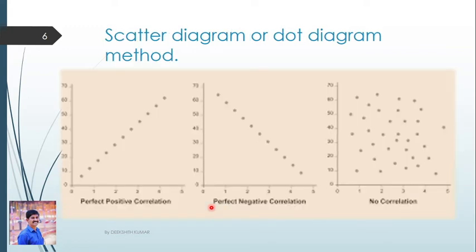The first method is the scatter diagram or dot diagram method. It is a graphic presentation of bivariate data, that is X and Y. When there are two variables, the data is called bivariate data. The bivariate data with n pairs of values is represented by n points on the XY plane, plotted on the X-axis and Y-axis.